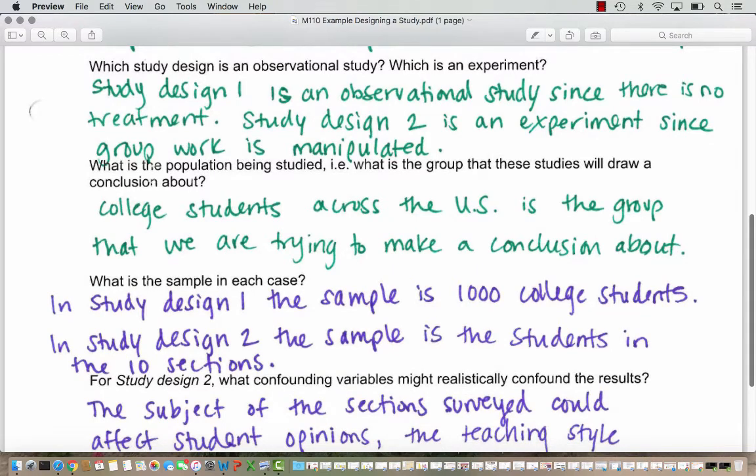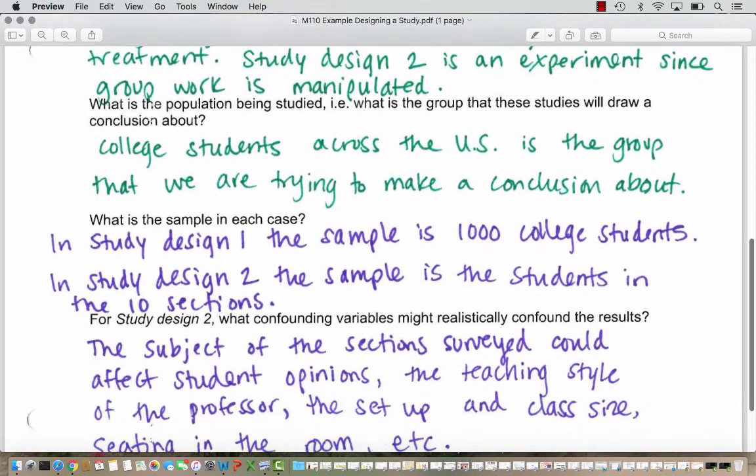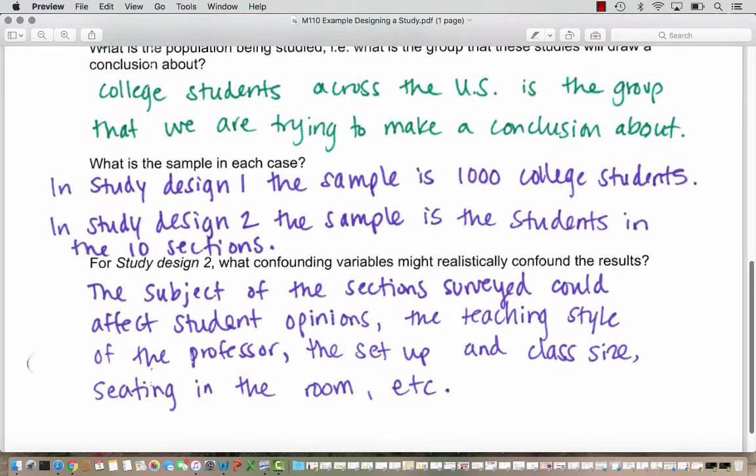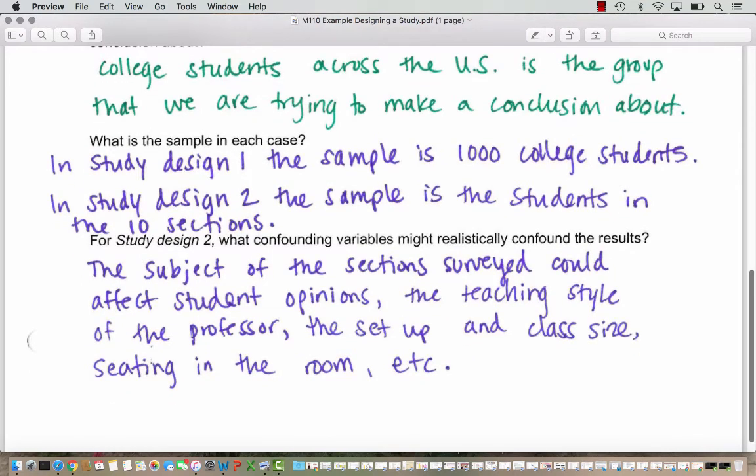In study design two, our experiment, we want to think about what are the confounding variables that might realistically confound the results. Remember, to confound a study is to mix up the results so that we don't know what's contributing to the response. The subject of the section surveyed could affect student opinions.